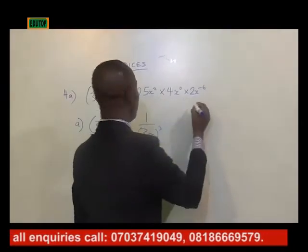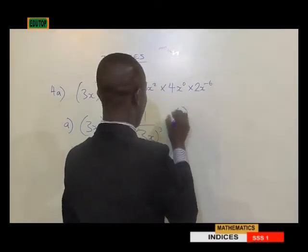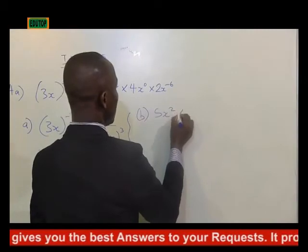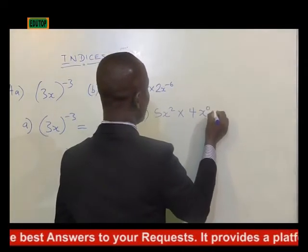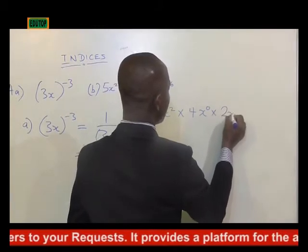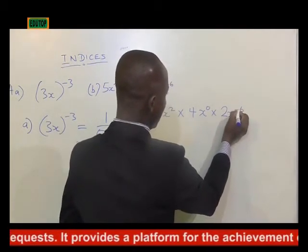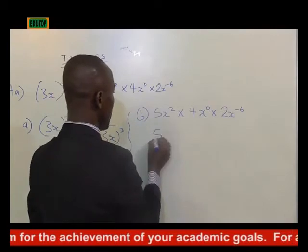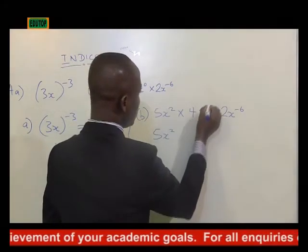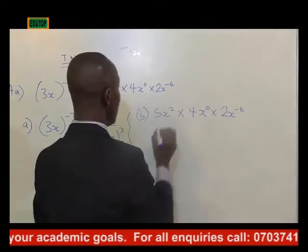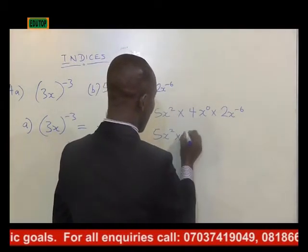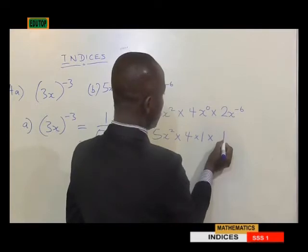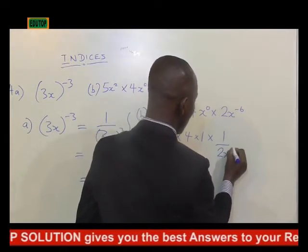For part b, we have 5x squared times 4x raised to power 0 times 2x raised to power minus 6. The key point of interest is this minus, which means inverse. Now, x raised to power 0 equals 1 from our third law, so we have 5x squared times 4 times 1, times 1 over 2x raised to power 6.